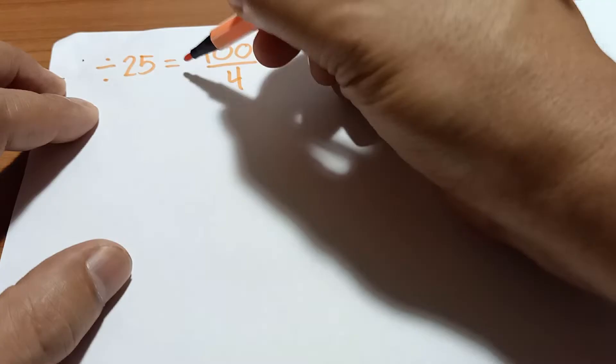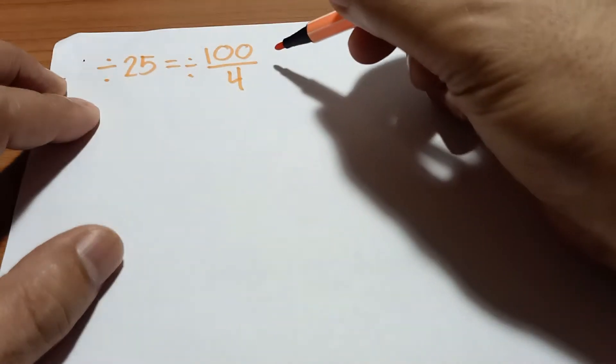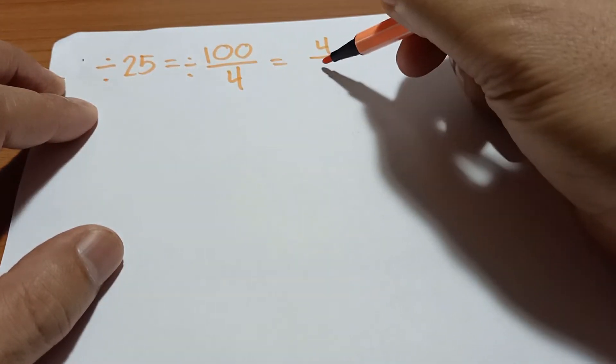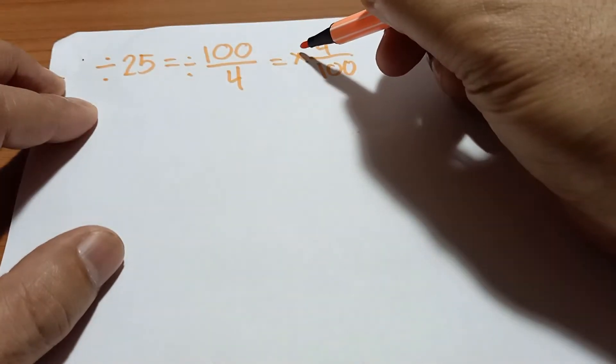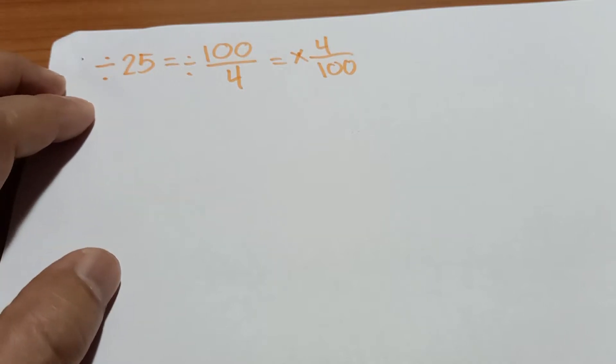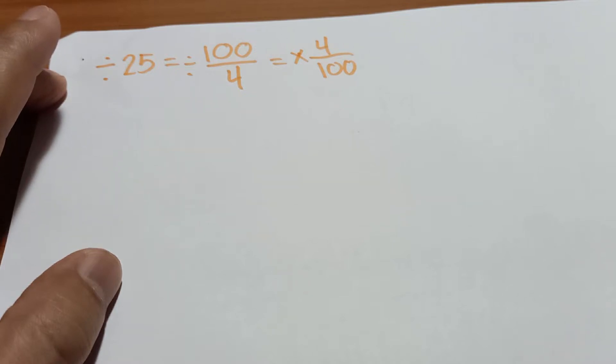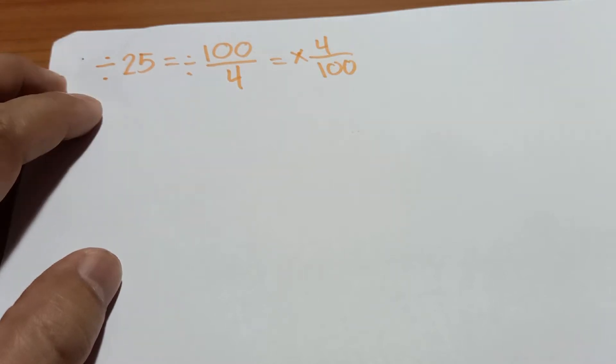And this is divided by 100 over 4, which is also equal to 4 over 100 multiplied. So that means in dividing a number by 25, we just simply multiply it by 4 and then divide it by 100.